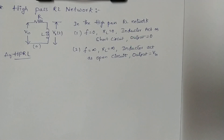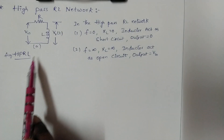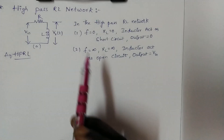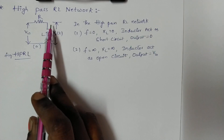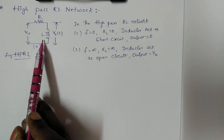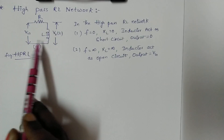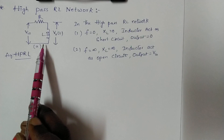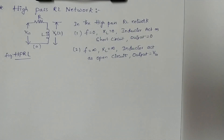Today's topic is the high pass RL network. Unlike the RC circuit which has resistor and capacitor components, the high pass RL network has only a resistor and inductor. It is called high pass because it allows all high frequency signals and attenuates low frequency signals. At low frequencies, the reactance of the inductor is zero, so it acts as a short circuit and no input voltage appears at the output. At high frequencies, the inductance is very large and it acts as an open circuit, so all input voltage appears across the output.